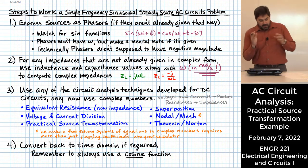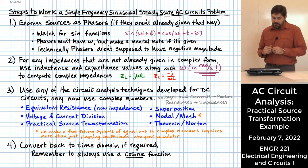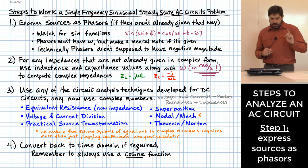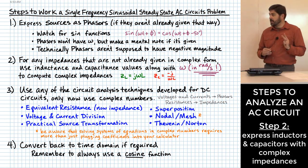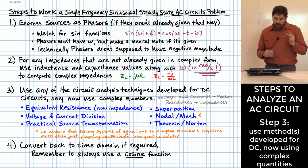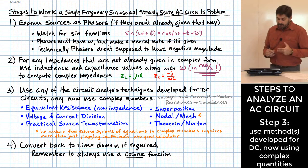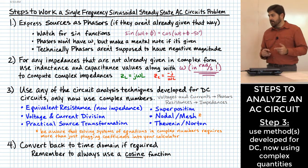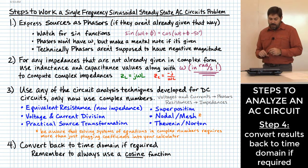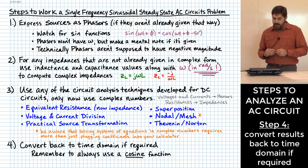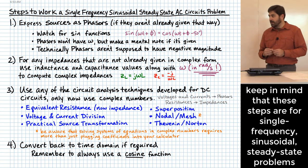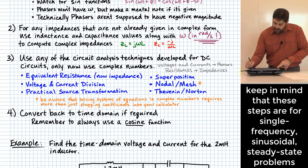Alright, let's remind ourselves about the steps to work a single frequency sinusoidal steady state AC circuits problem. We're going to express our sources as phasors, express all components with complex impedances if needed, use a circuit analysis technique that we've already learned to bring to bear on this one, and if required convert our results back to time domain using a cosine function.